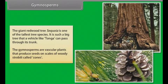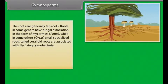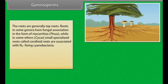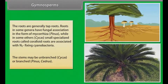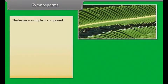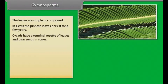Gymnosperms are vascular plants that produce seeds on scales of woody strobili called cones. The roots are generally tap roots. Roots in some genera have fungal association in the form of mycorrhiza, as in Pinus, while in others like Cycas, small specialized roots called coraloid roots are associated with nitrogen-fixing cyanobacteria. The stems may be unbranched, as in Cycas, or branched, as in Pinus and Cedrus. Cycas have a terminal rosette of leaves and bear seeds in cones.